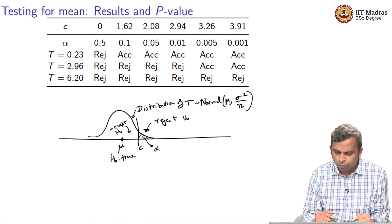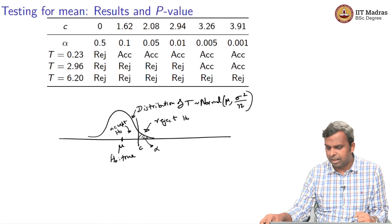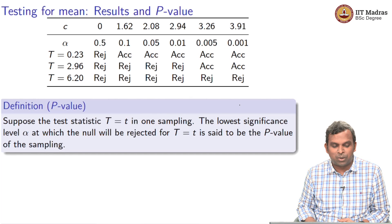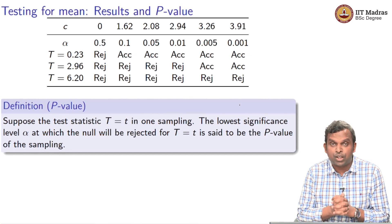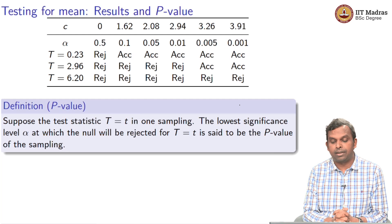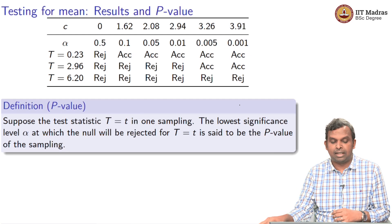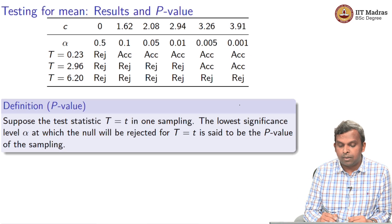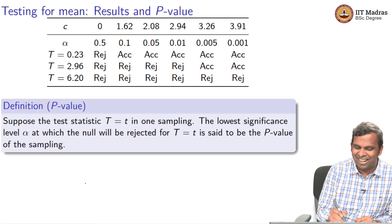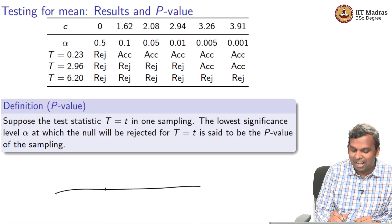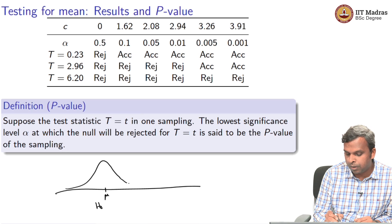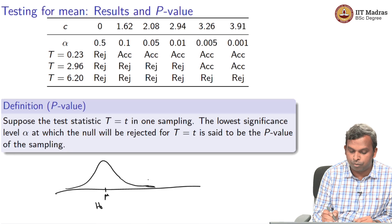Now, what is the p-value? Let me define it and then draw a picture. Supposing you got a value for T in one of your samplings — the lowest significance level at which you will reject null for T equals that observed value is the p-value. So let us draw the same picture again: you have a null hypothesis mu, the distribution for T is centered around mu, giving a normal distribution.